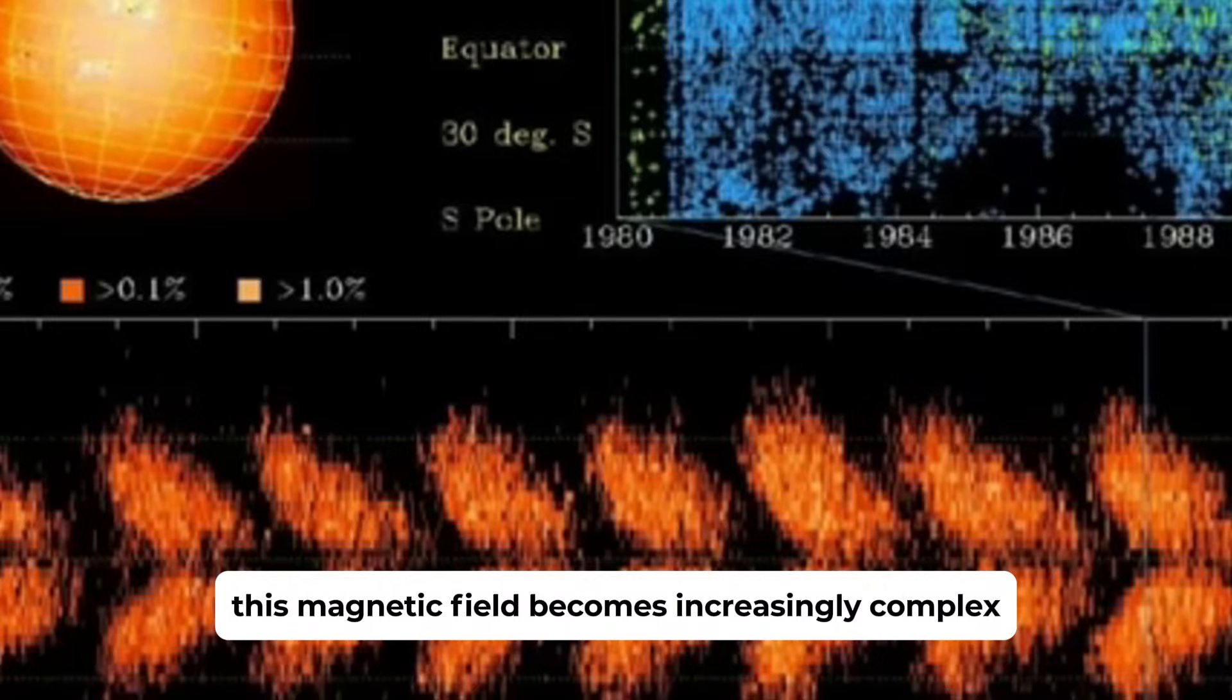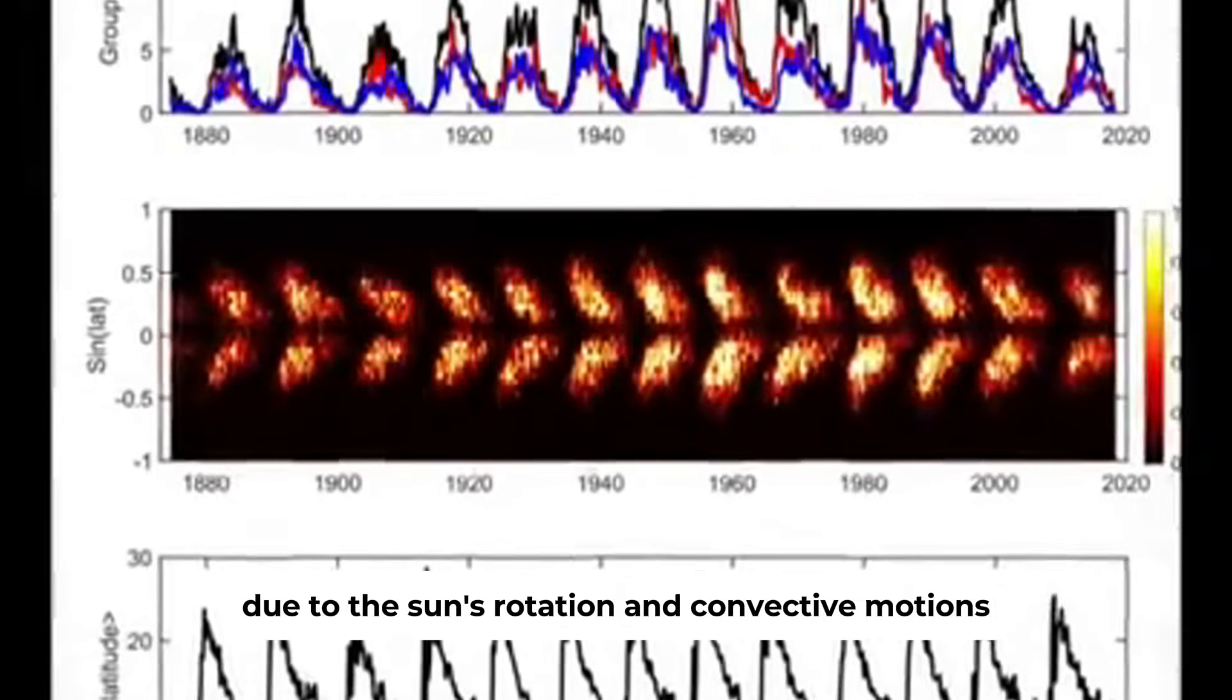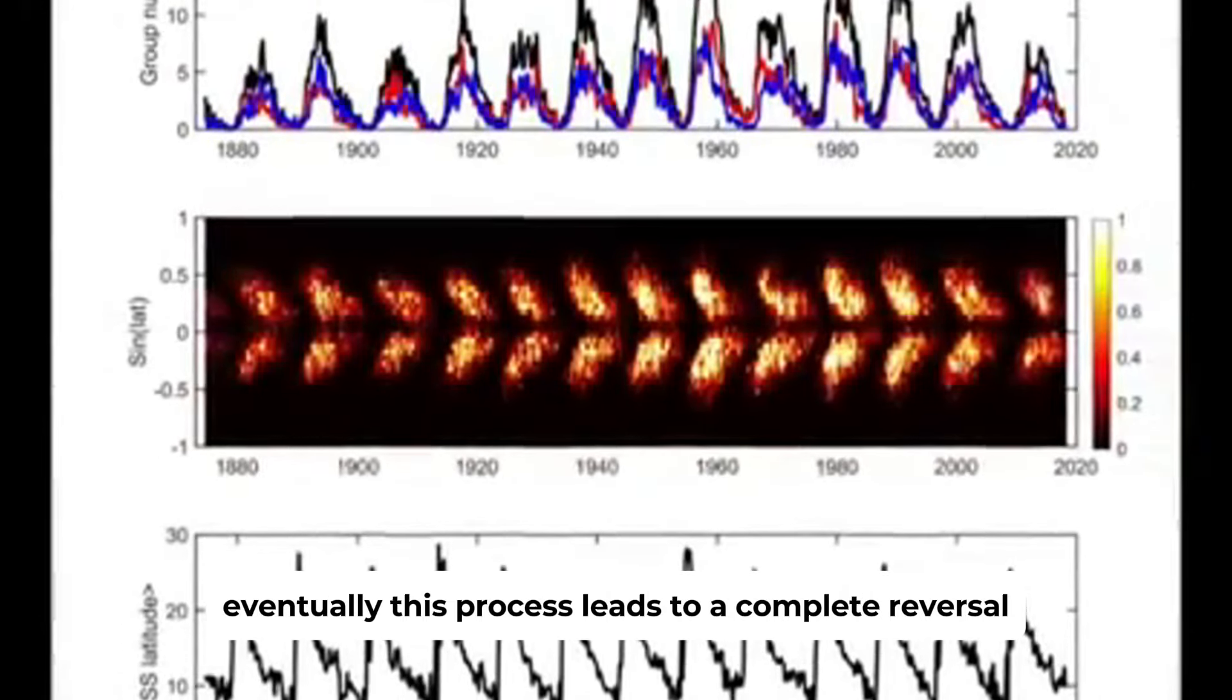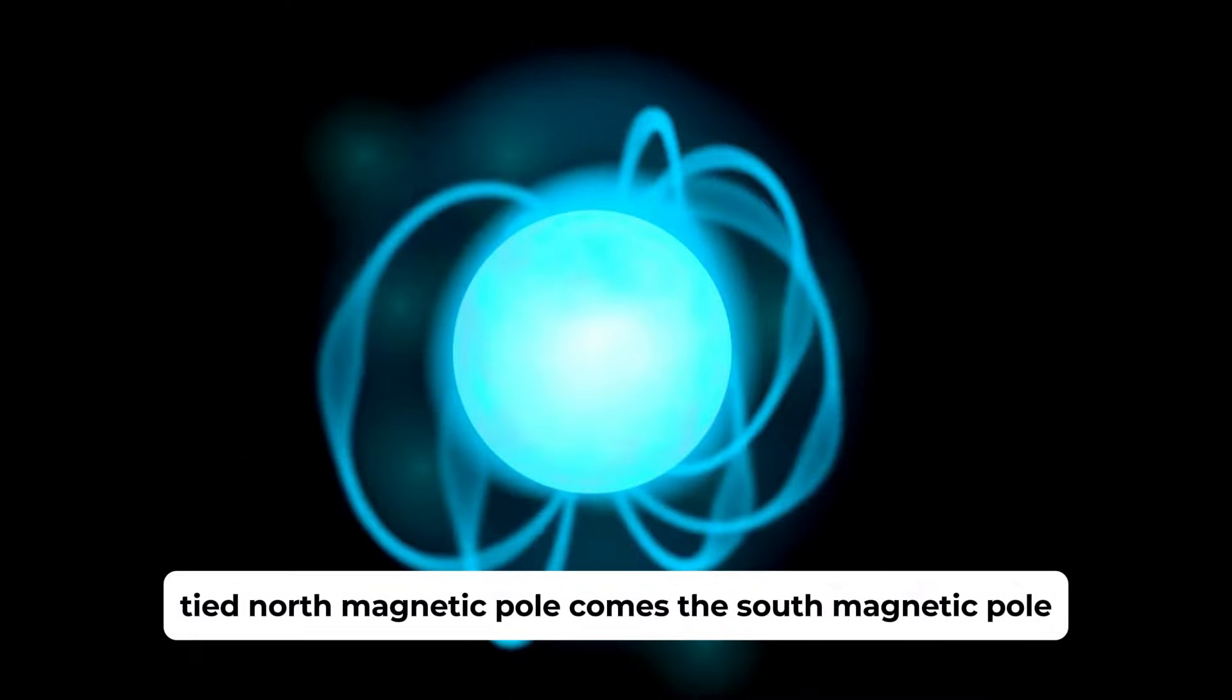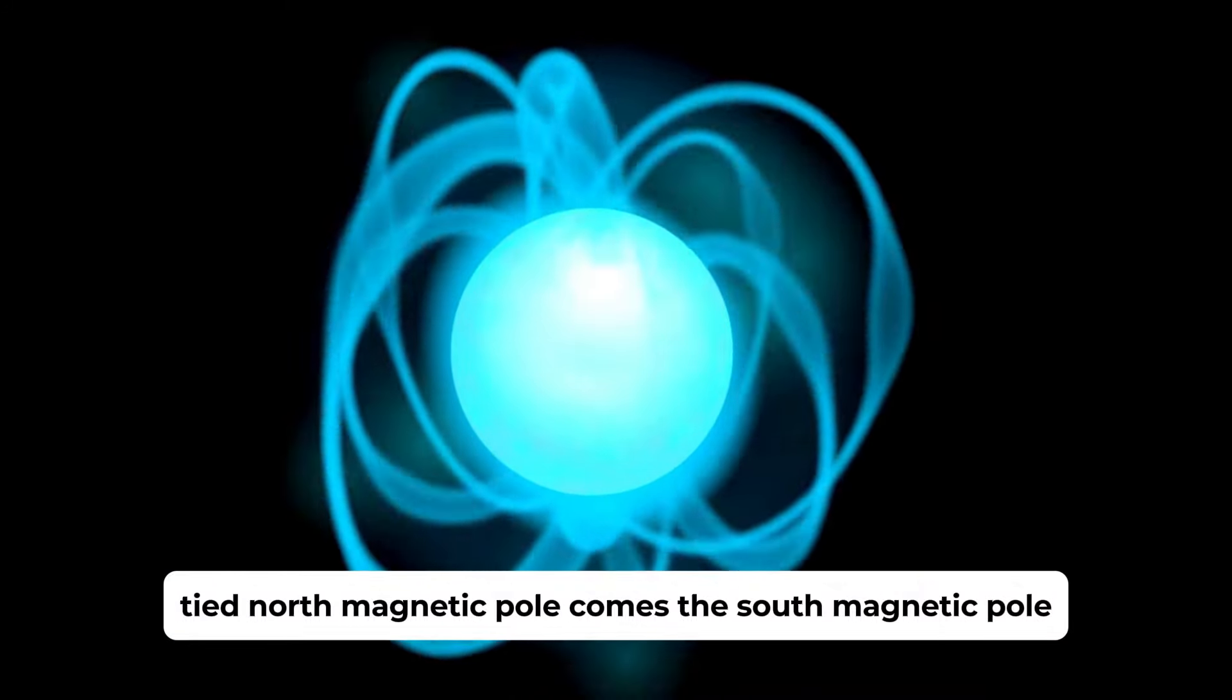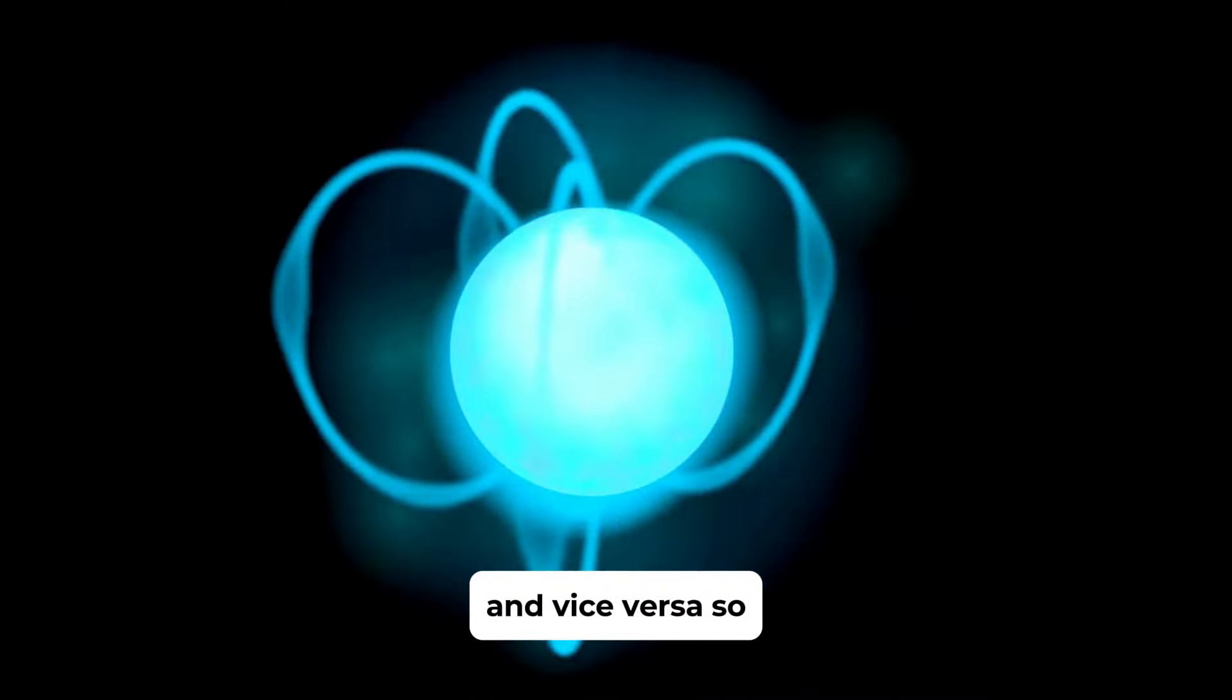Over time, this magnetic field becomes increasingly complex and twisted due to the Sun's rotation and convective motions. Eventually, this process leads to a complete reversal of the magnetic poles, where the north magnetic pole becomes the south magnetic pole and vice versa.